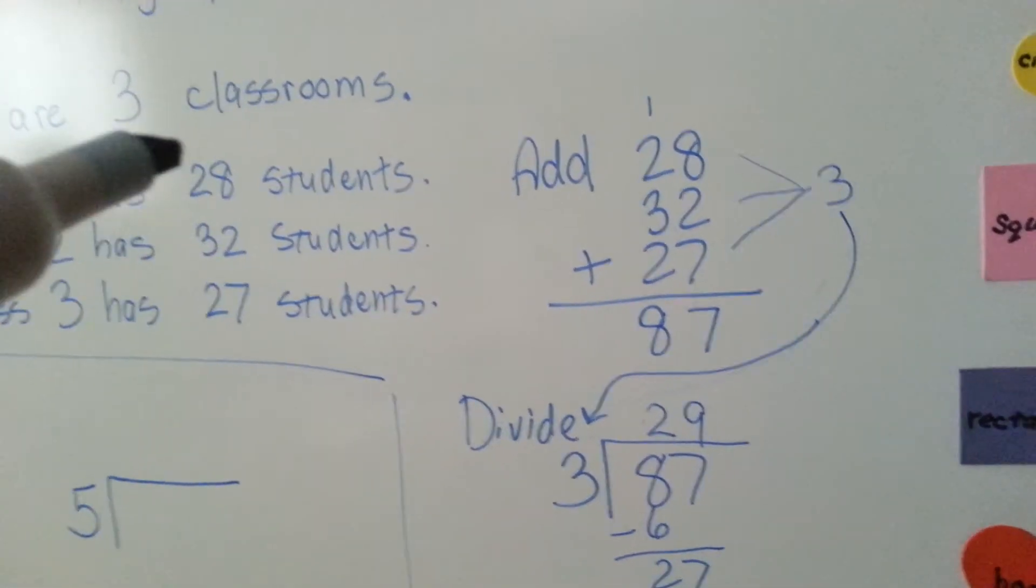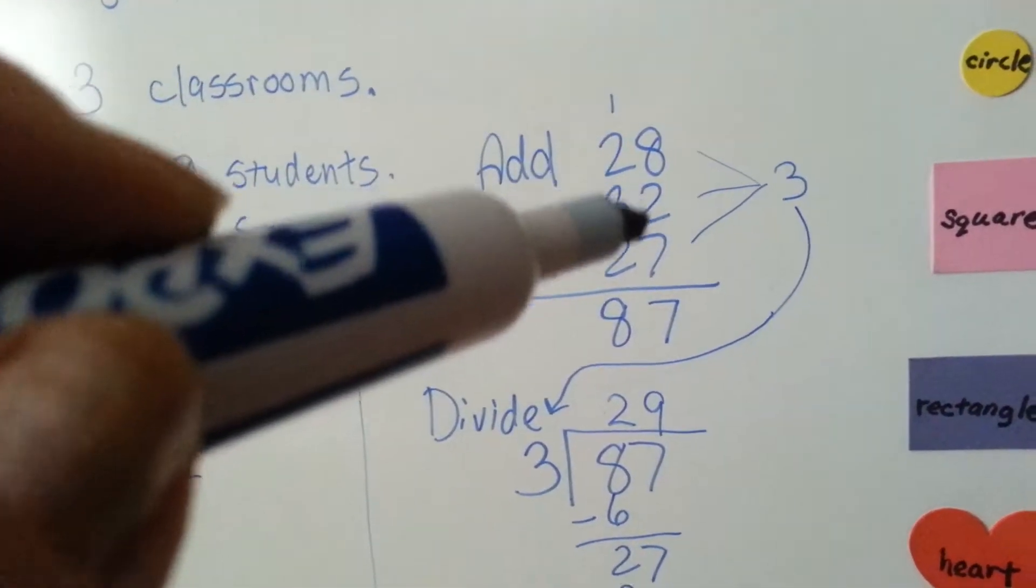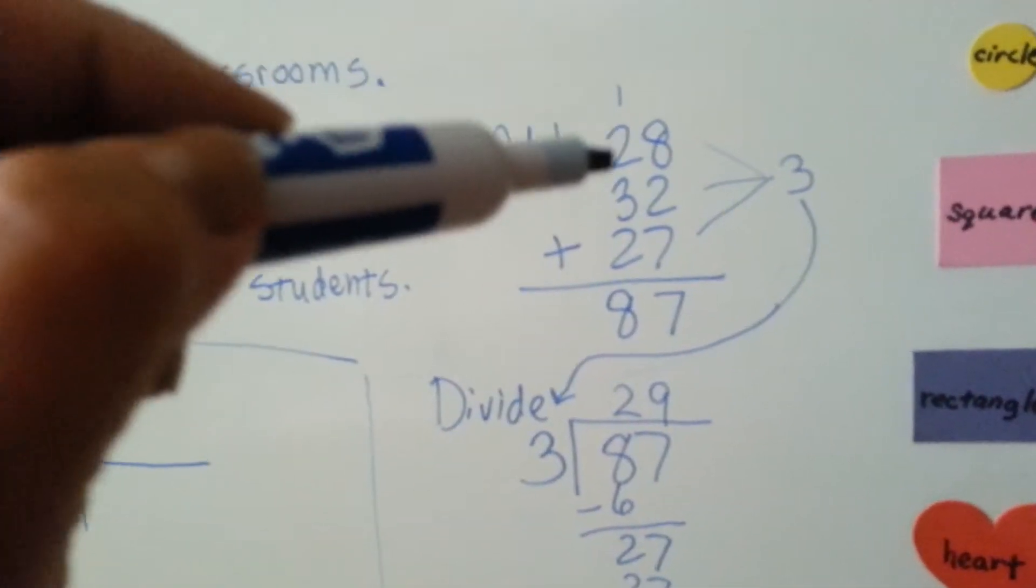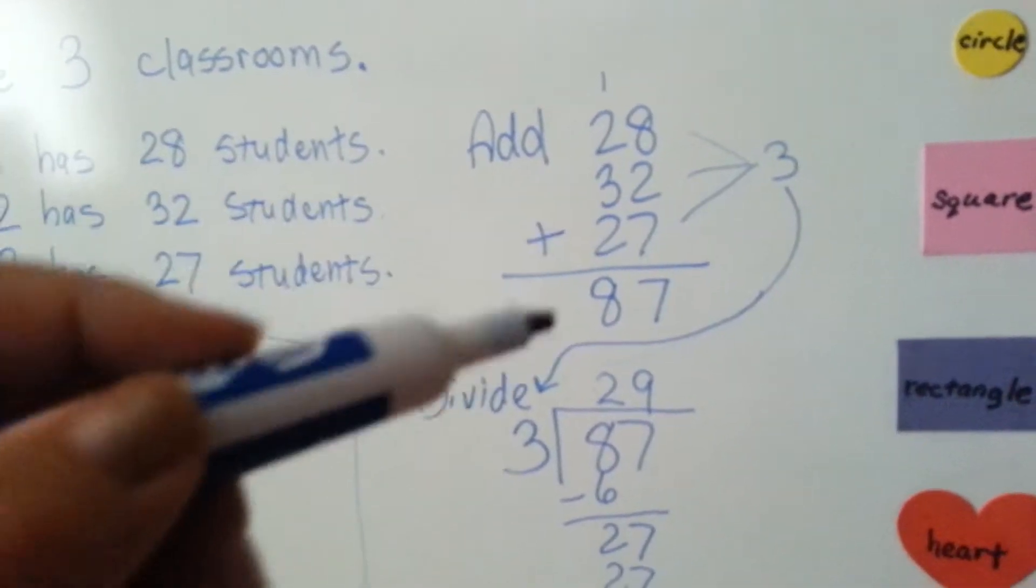In this case, you would divide it by three because there's three things that we're adding. Well, 8 plus 2 is 10, plus 7 is 17, we carry the 1 and put the 7 down. 1 plus 2 is 3, plus 3 is 6, and 2 more is 8. That's 87.